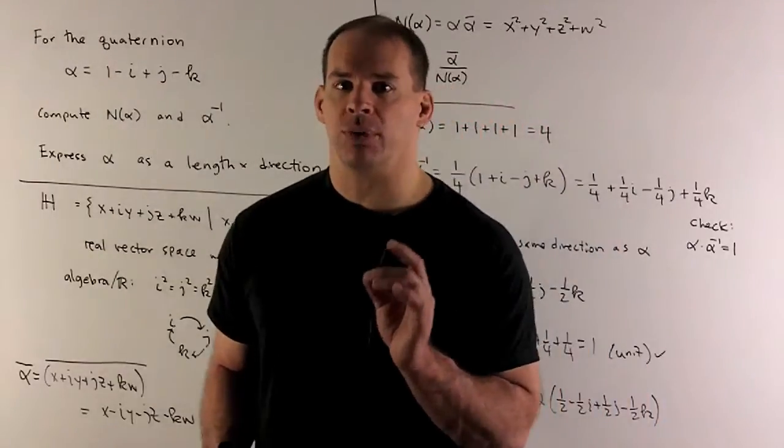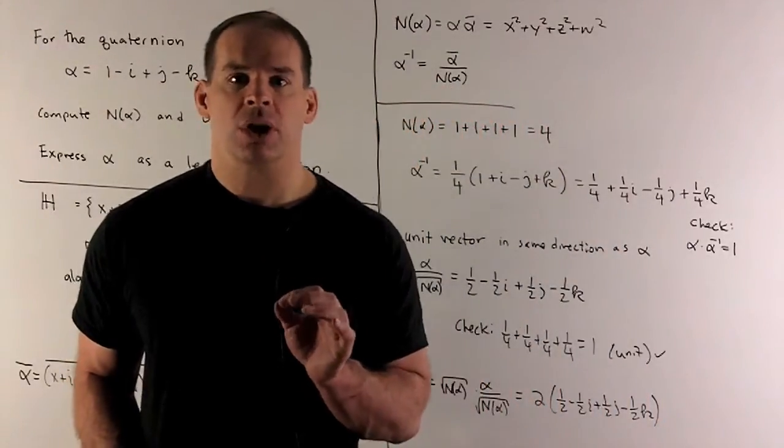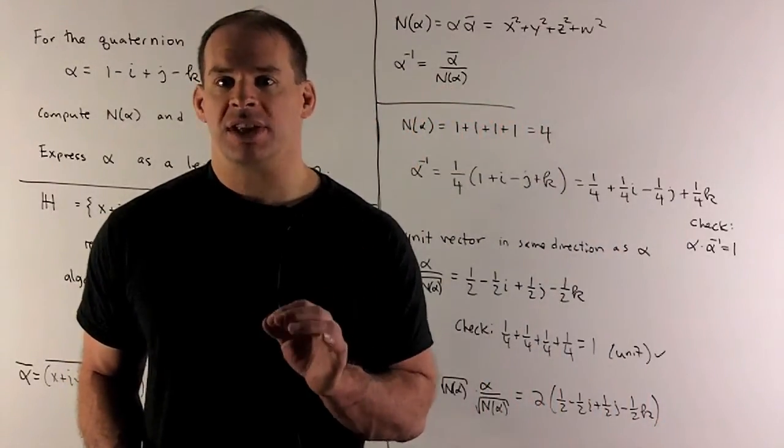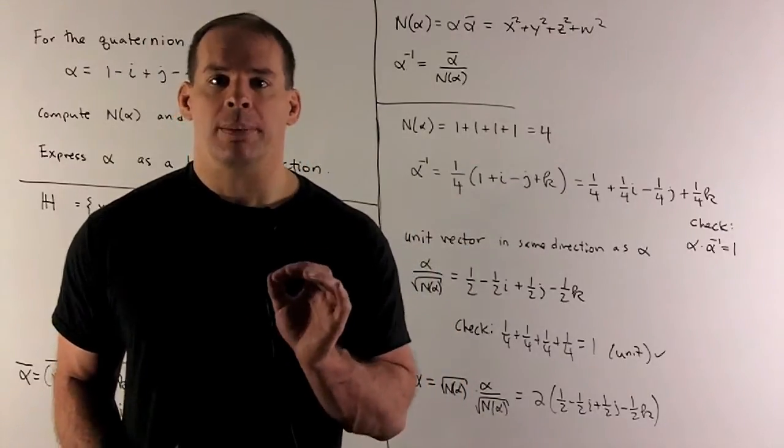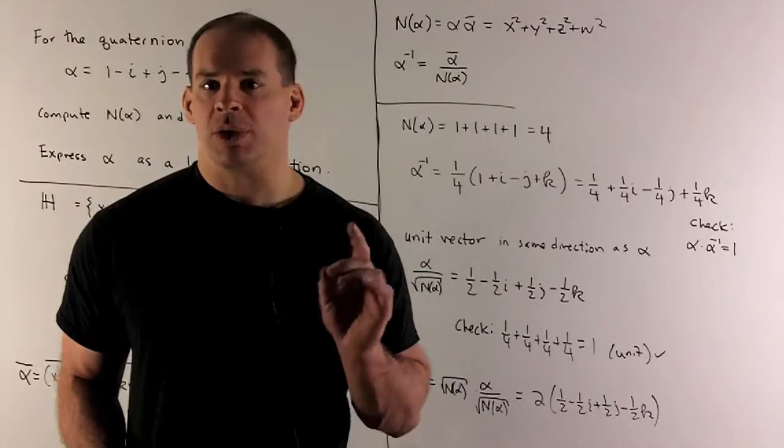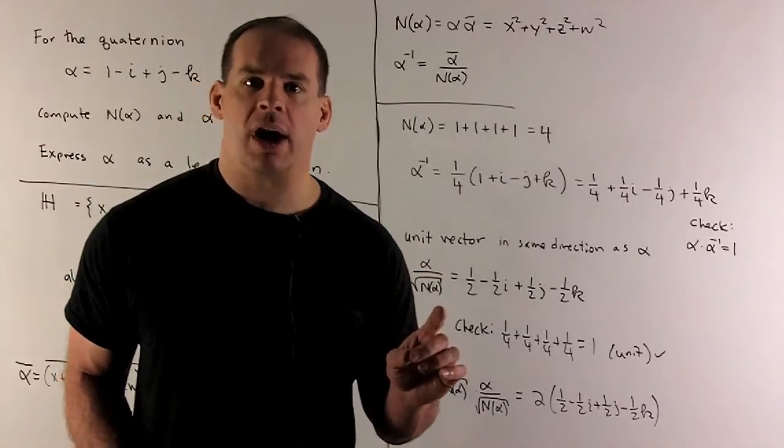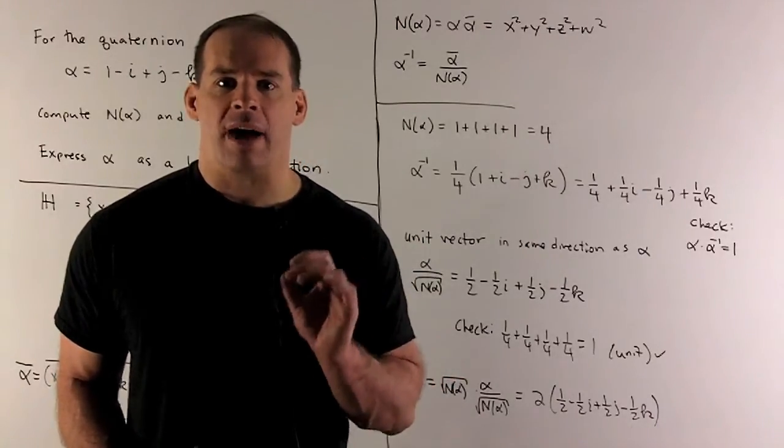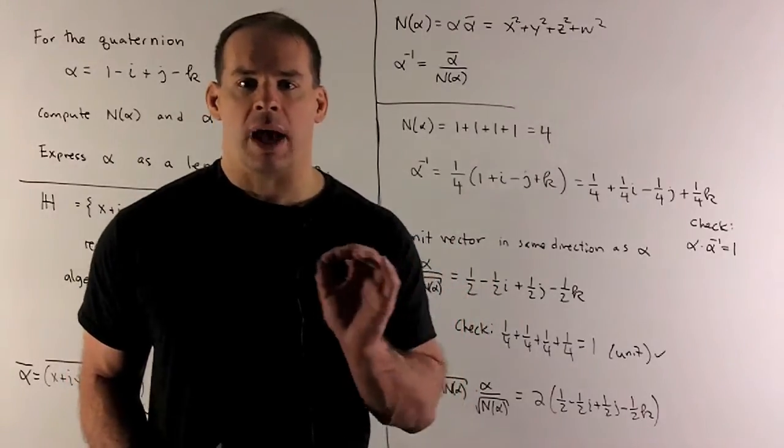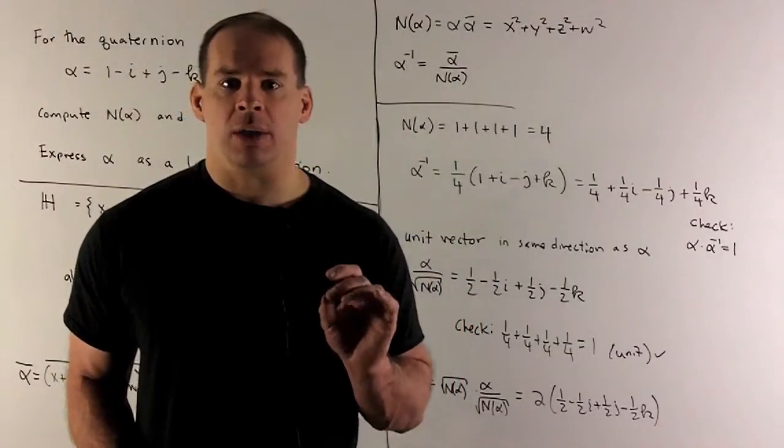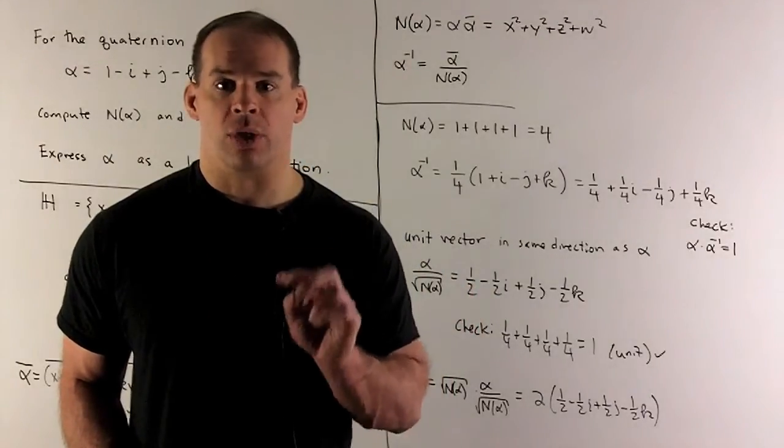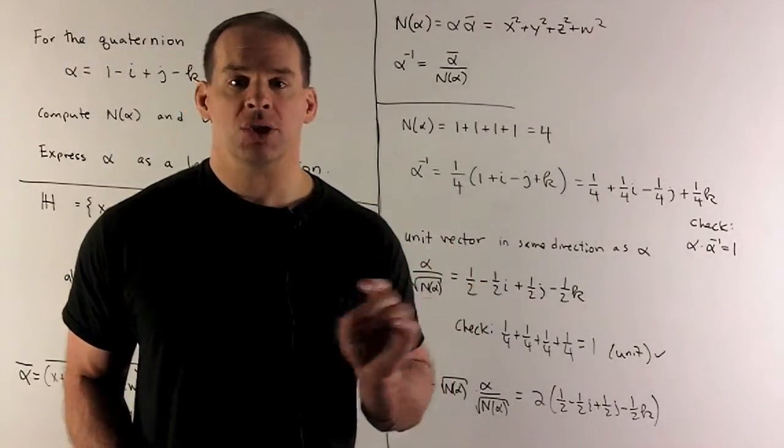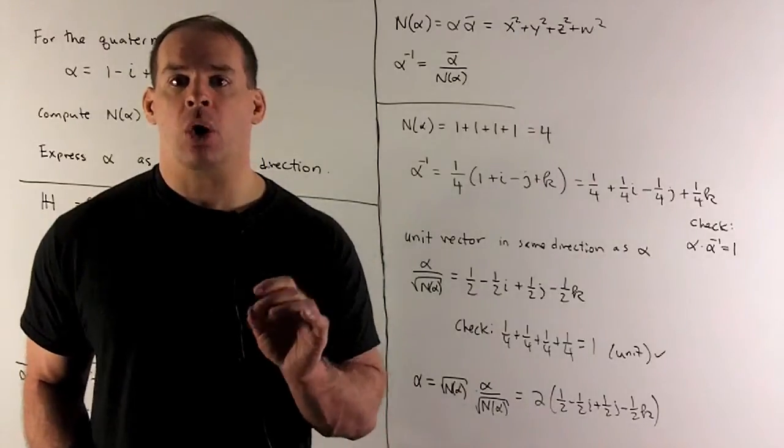With conjugation, we have a few formulas. So first, our norm is going to be the distance from our quaternion to the origin. So that's going to be x squared plus y squared plus z squared plus w squared, but it's also equal to alpha times alpha bar. Now, we have alpha times alpha bar equals the norm. So we have alpha times alpha bar over the norm equals 1. So our inverse is going to be alpha bar over the norm.